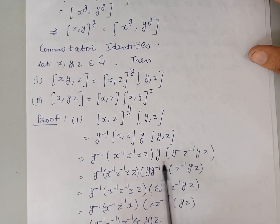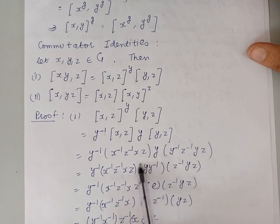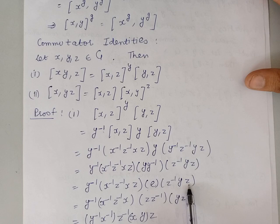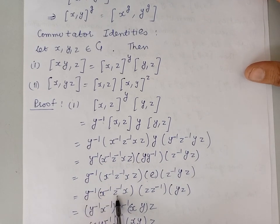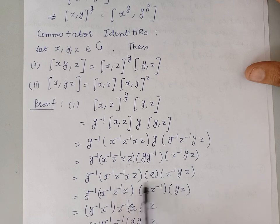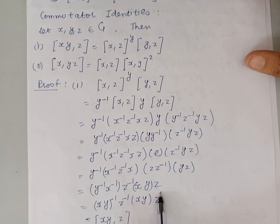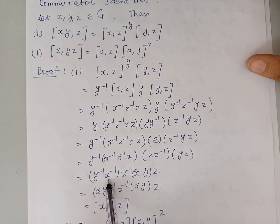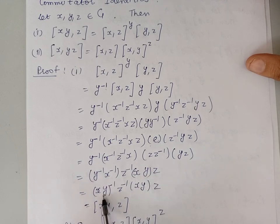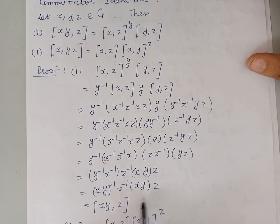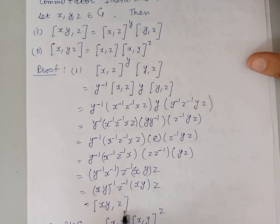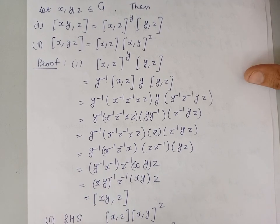From the expression y inverse · x inverse z inverse xz · y · y inverse z inverse yz, we can combine y · y inverse to give the identity. This reduces to y inverse x inverse z inverse xz · z inverse yz. Then z · z inverse is also identity, giving y inverse x inverse z inverse xy z. Now y inverse x inverse is the inverse of xy, so the expression becomes (xy) inverse · z inverse · xy · z. By definition, this is the commutator [xy, z], which completes the proof of the first commutator identity.